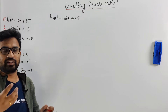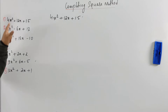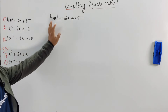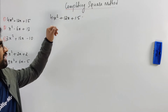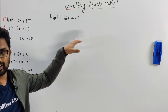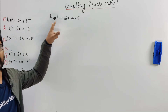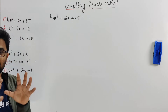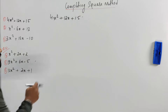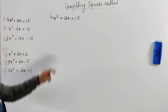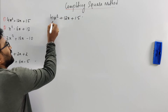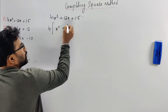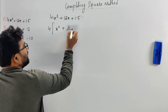I'll tell you a general method. The coefficient is four here. You may have different coefficients. Sometimes, if you have perfect squares — four, nine, sixteen — there's a perfect square root for that, like two squared is four, three squared is nine, so it's easier. But for the general method, you have to take the four out to make sure the coefficient of x squared is one. So take four out and get x squared plus 3x plus 15 by 4.